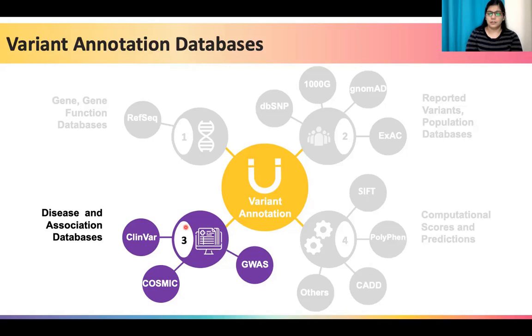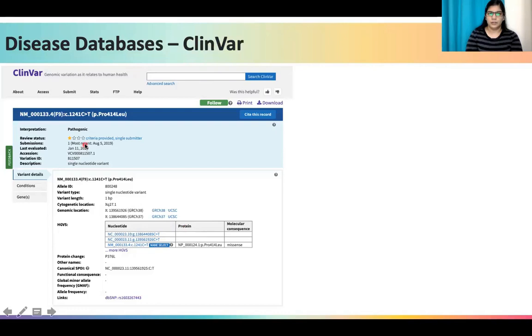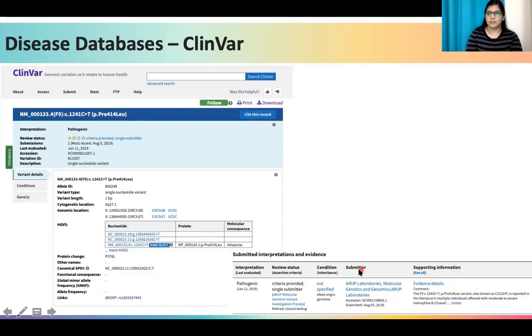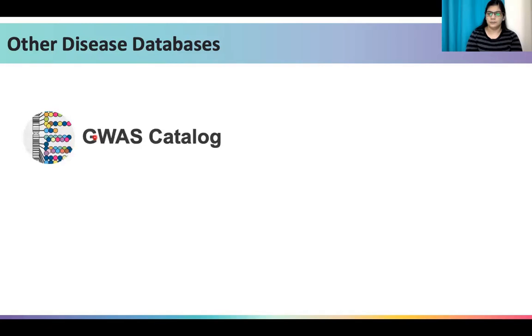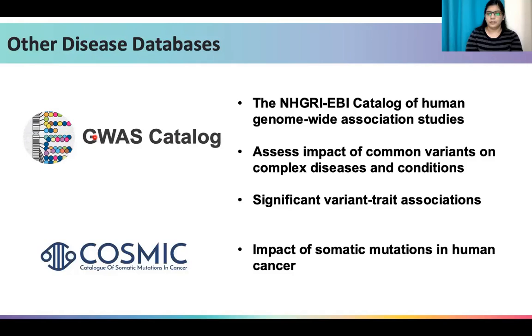Next, we need to annotate and check if the variant is already reported in context of a disease in databases such as ClinVar. ClinVar will not only provide the disease name for the variant, it will also provide the interpretation or clinical significance that has been reported and the supporting information provided by the submitter regarding the evidence that led them to interpret the variant as pathogenic. Apart from ClinVar, there are other phenotype or disease association databases such as the GWAS catalog for variants from genome-wide association studies, or the COSMIC database for mutations reported in the context of human cancer.